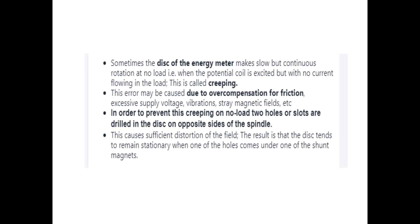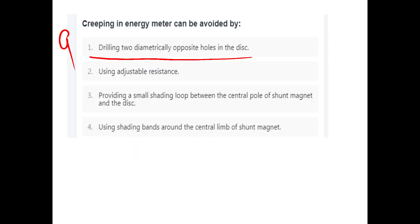Sometimes the disc of the energy meter makes slow but continuous rotation at no load — even under no load conditions. That is when the potential coil is excited but with no current flowing in the load. This process is called creeping. This error may be caused due to over-compensation for friction, and it can be remedied by drilling diametrically opposite holes in the disc.